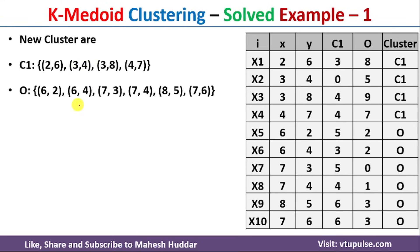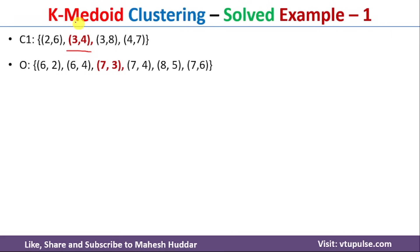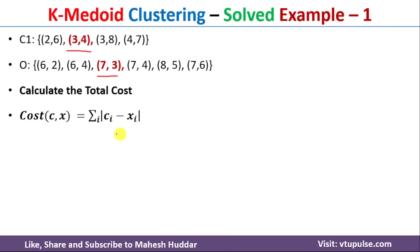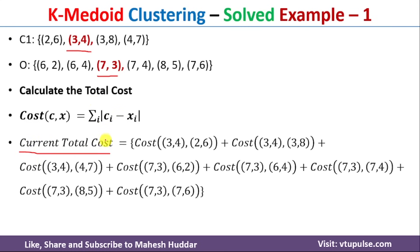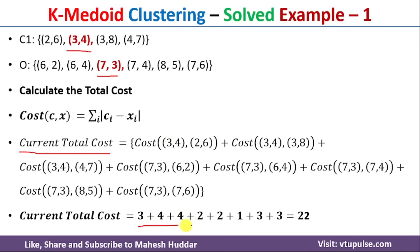With the new clusters formed using medoids (3,4) and (7,3), we calculate the new total cost. Individual costs are computed from (3,4) to its cluster members and from (7,3) to its cluster members, then all are summed. Adding all individual costs gives a new total cost of 22 for these updated clusters.